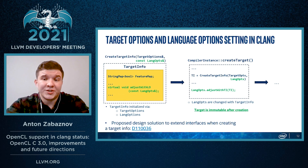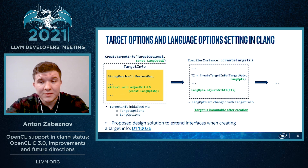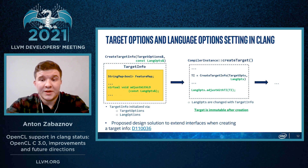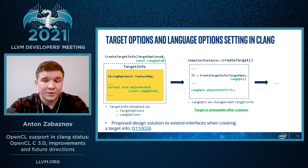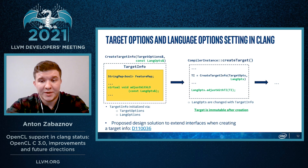Target information is created with regards to language settings, while language settings are allowed to be changed further. This doesn't contradict any rules, as currently such an effect may also happen when, for example, parsing a specific pragma statement.